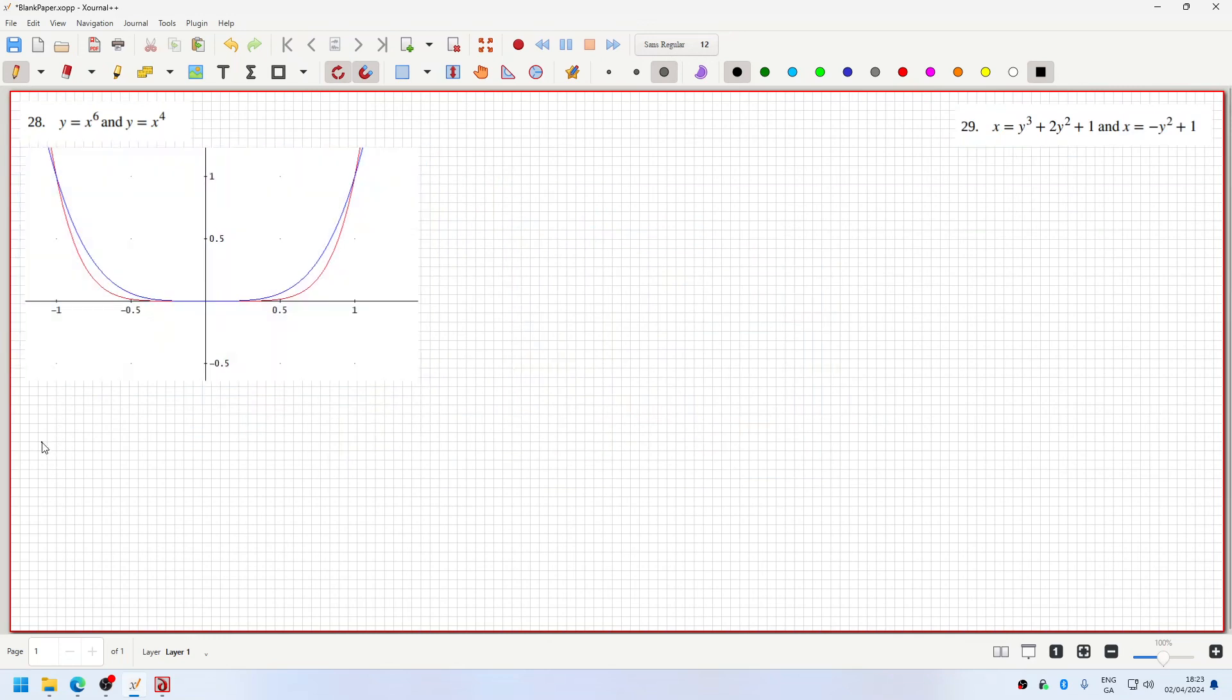So it would be twice the integration from 0 to 1, x power 4 minus x power 6 dx, which would be twice x power 5 over 5 minus x power 7 over 7.